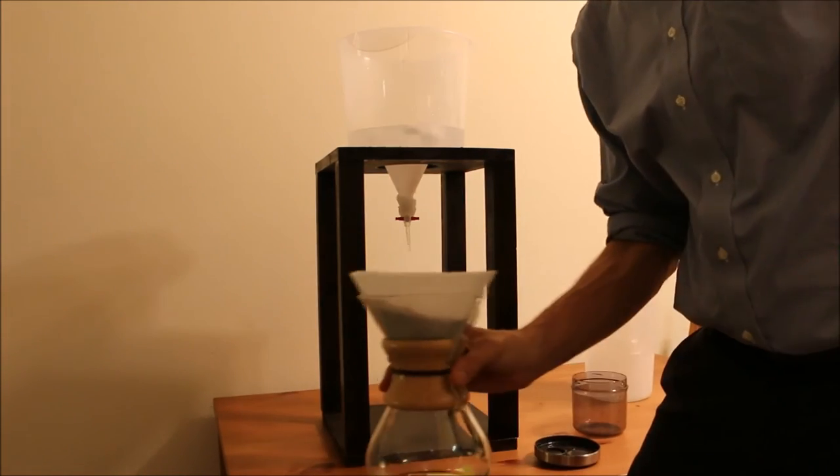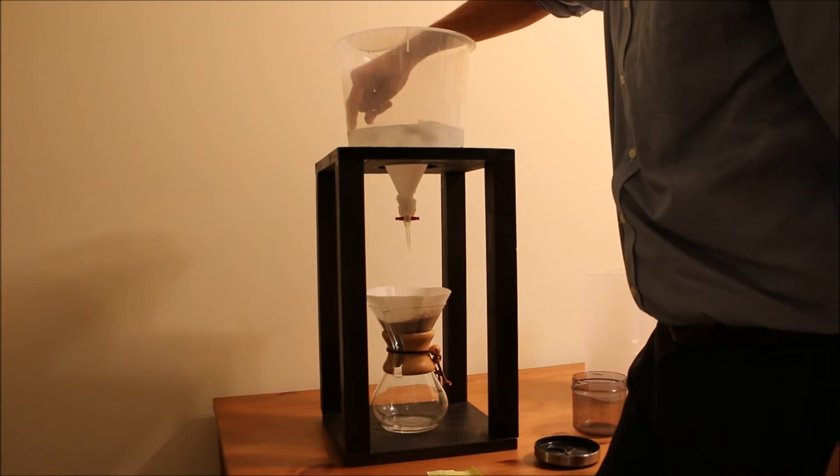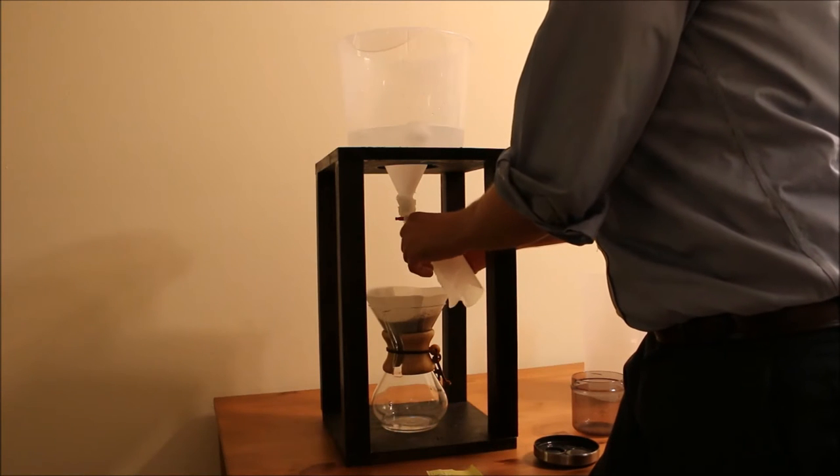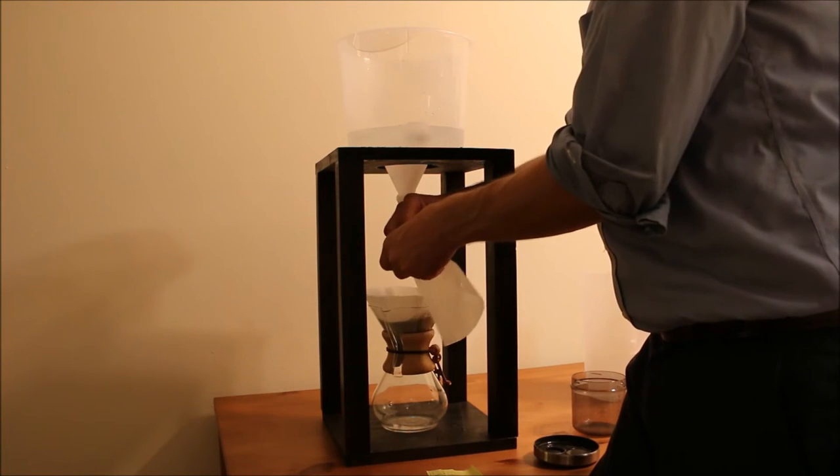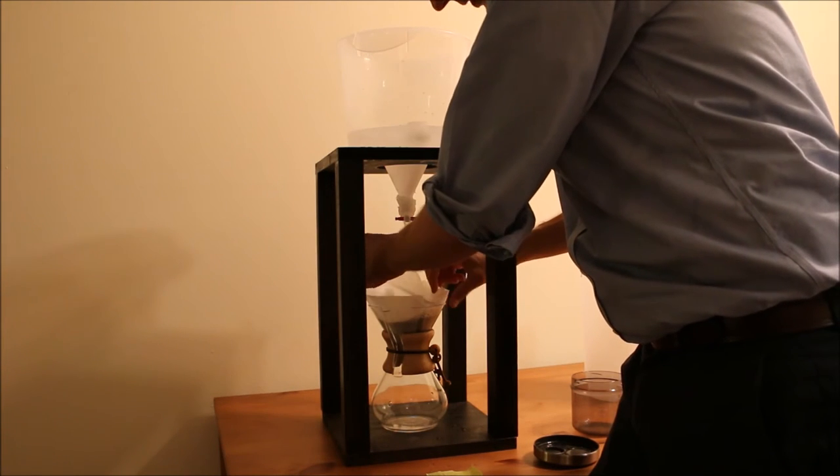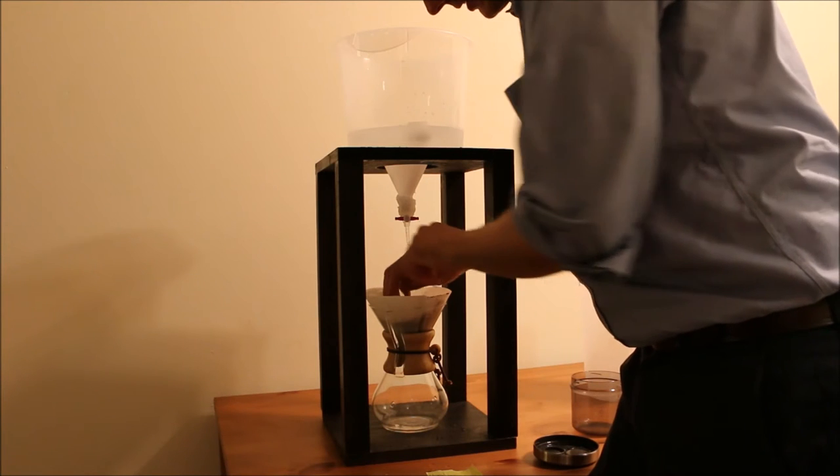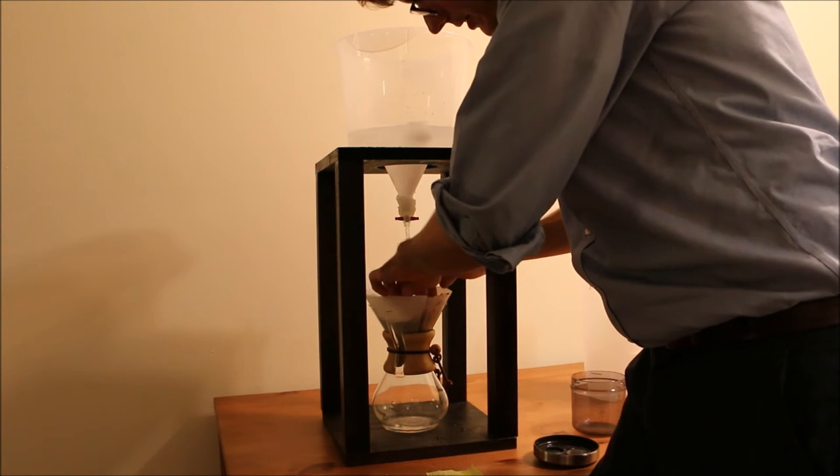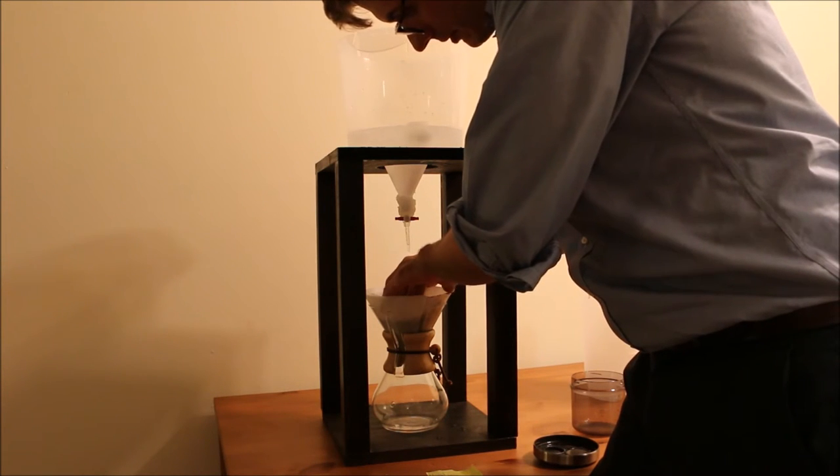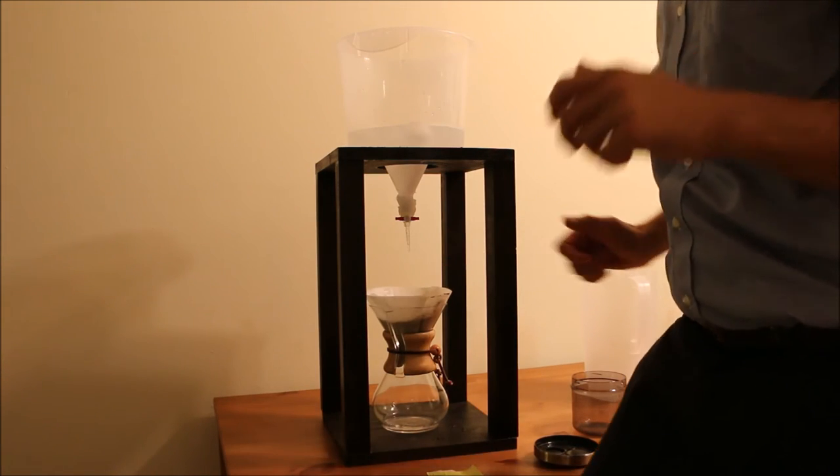And then shake it out, get it nice and flat. And then the reason you want this wetted filter on top of the grounds is just to ensure an even distribution of the water when it drips through. So go ahead and put this down. You could also cut a Chemex filter or cut this down. But I really think I get pretty good contact with this. I find it's just about a perfect fit, a 4 cup normal percolator Mr. Coffee type paper filter.